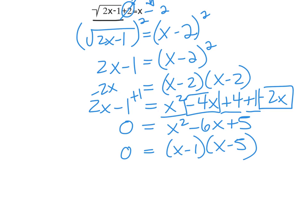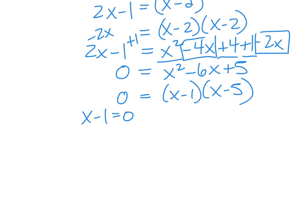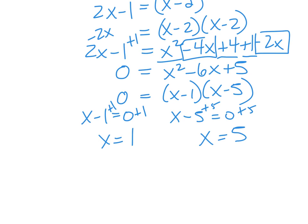Those are the two factors for that polynomial, and we can go ahead and solve for x. Setting the first factor x minus 1 equal to 0 gives x equals 1, and setting the second factor x minus 5 equal to 0 gives x equals positive 5.